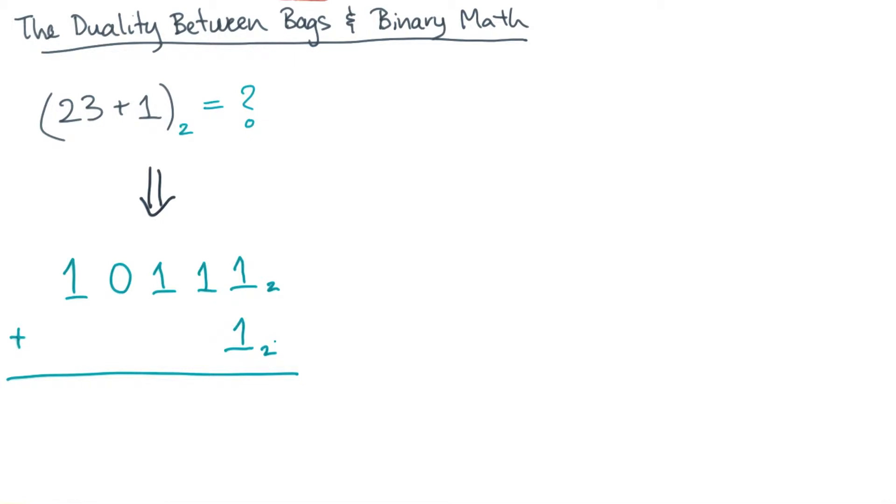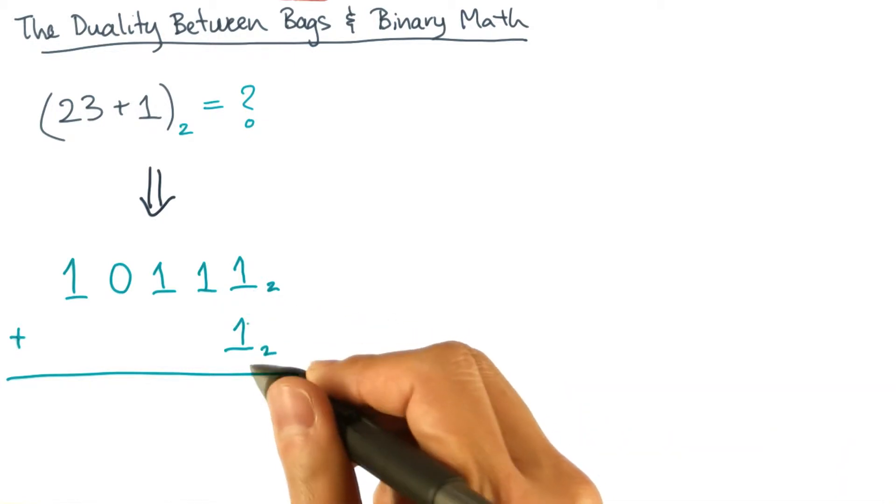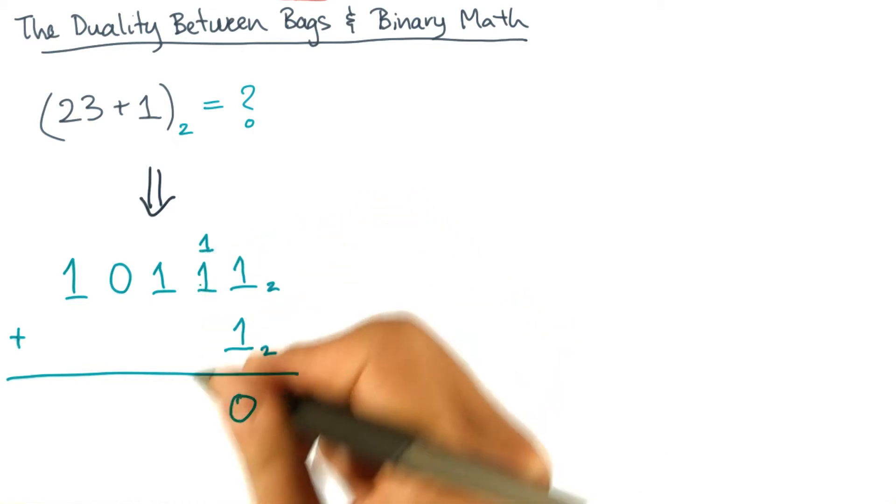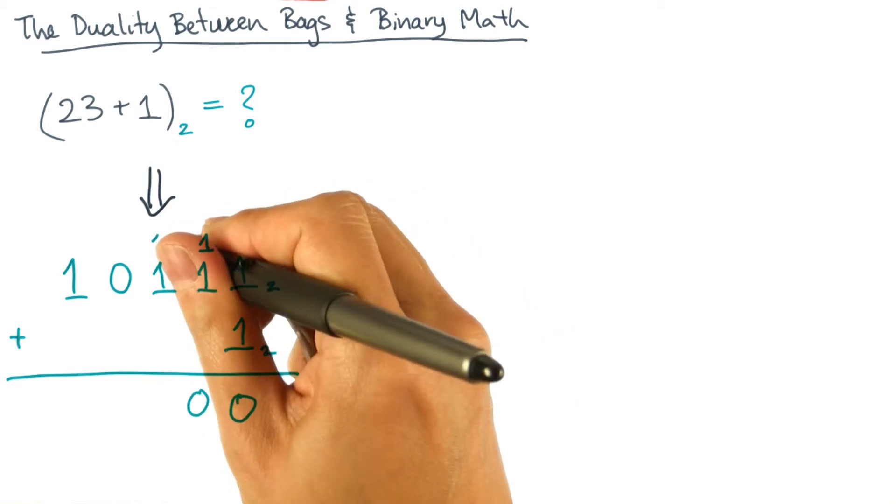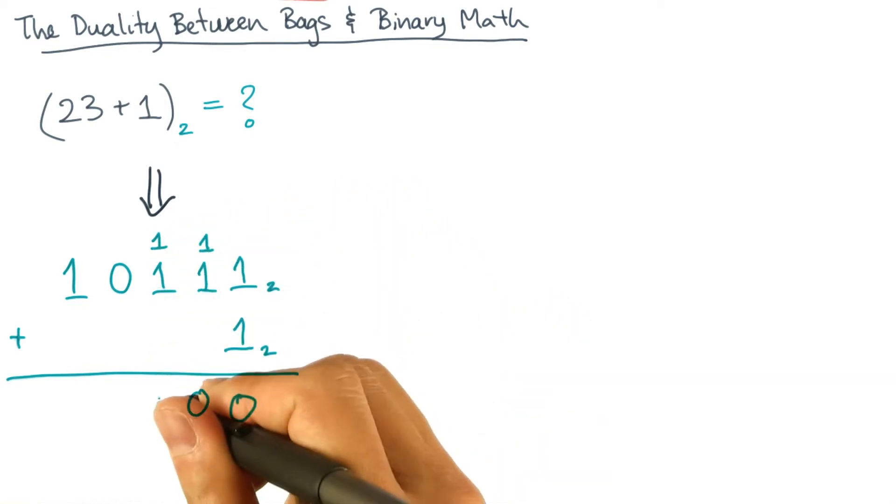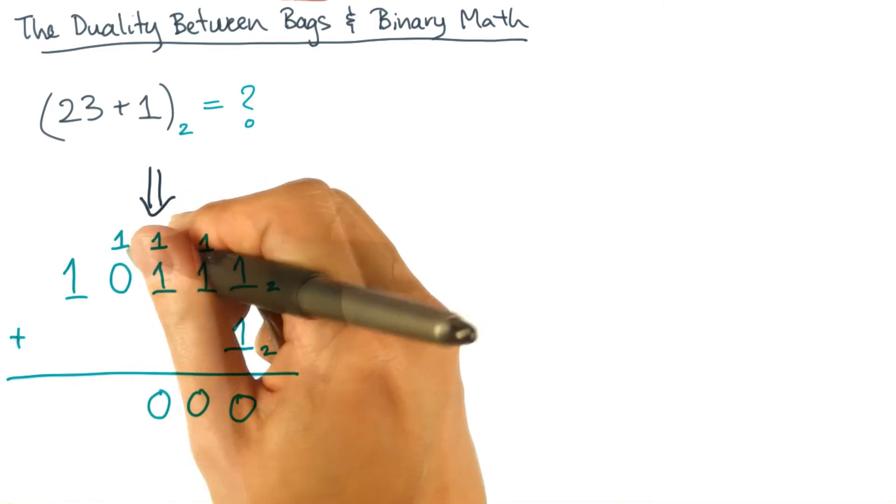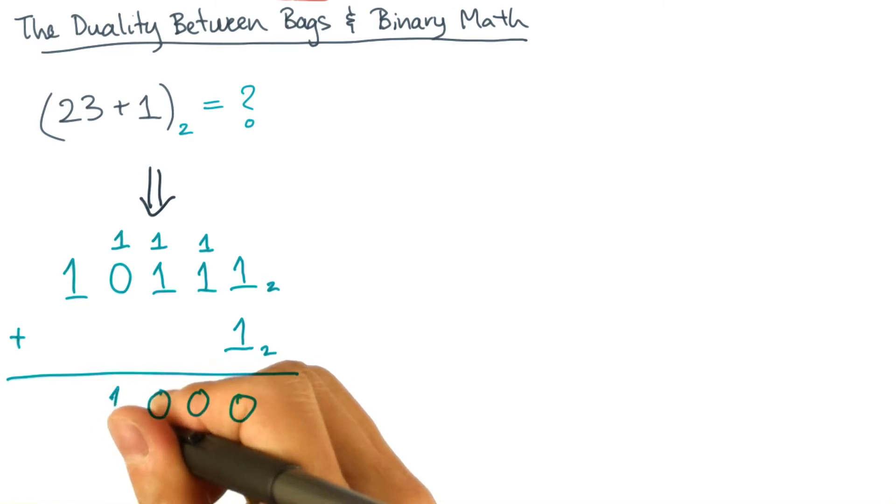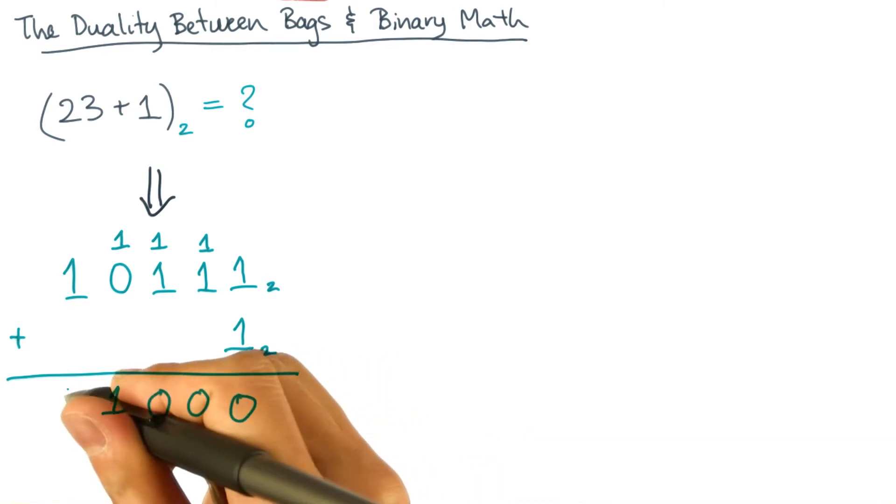So here's what you did in computer science preschool. Let's see, 1 plus 1 is 0, carry the 1. 1 plus 1 is 0, carry the 1. 1 plus 1 is 0, carry the 1. Finally a little variety. 1 plus 0 is 1, with no carry, and finally drop the 1.